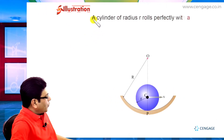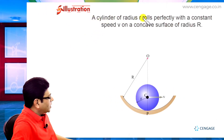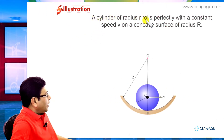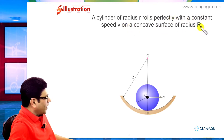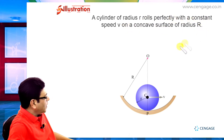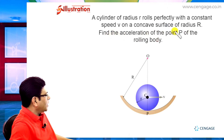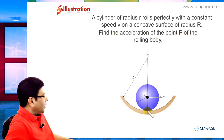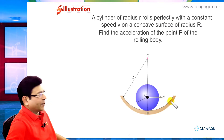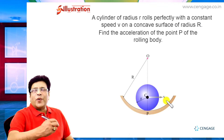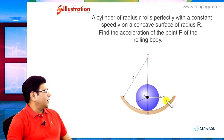In this illustration, we are given a cylinder of radius small r. It is rolling perfectly with the constant speed v on a concave surface of radius capital R. We need to find the acceleration of point p, which is the lowest point of this rolling body in contact with the track.